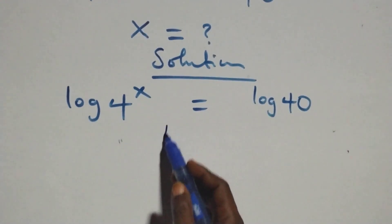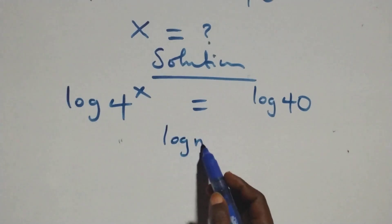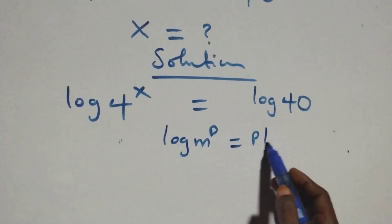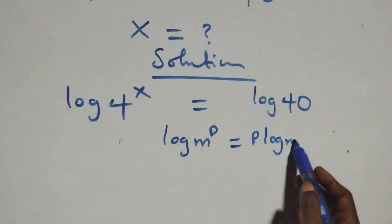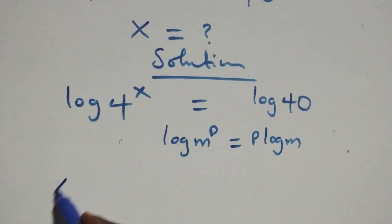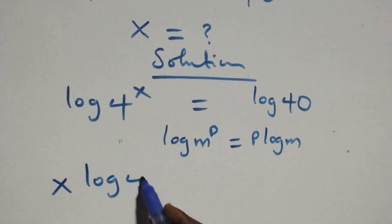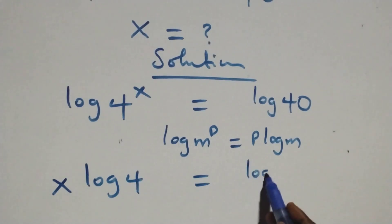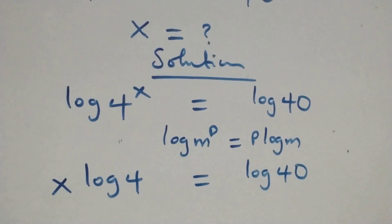We apply the power log rule. When we have log m raised to power p, this is the same thing as p times log m. So what we have here becomes x times log 4 equals to log 40 on this side.